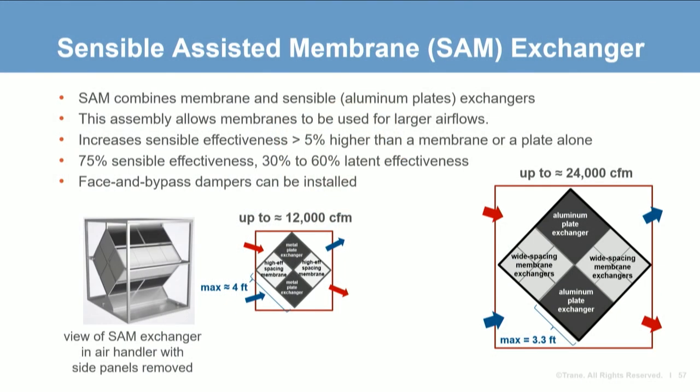SAM has the highest sensible effectiveness — 75% being typical — while achieving 30 to 60% latent effectiveness depending on conditions. The sensible plates actually enhance latent performance: the far membrane exchangers will have air pre-cooled by the upstream aluminum plate exchanger, which increases the relative humidity and thus increases the membrane's latent performance. No transitions or block-offs are needed. Unlike a bank of membrane exchangers, SAM uses metal plate exchangers to direct airflow to the second membrane, making it more usable in a typical air handler configuration and allowing the use of face and bypass dampers.